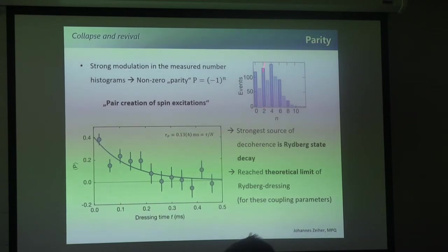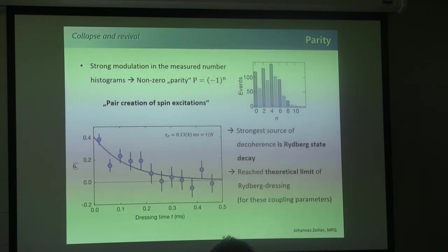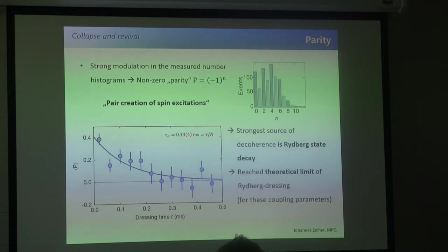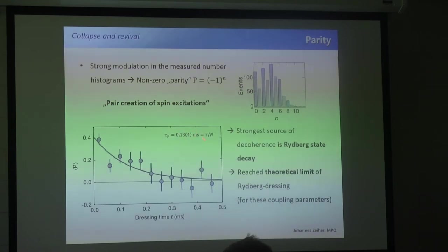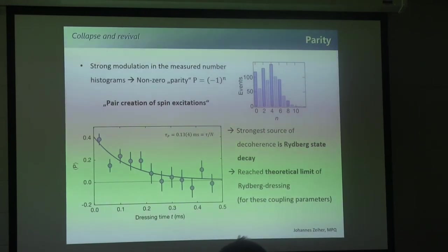The data shows a time constant of 130 microseconds for parity decay. Remembering the atom lifetime was 1.2 milliseconds, taking tau/N with approximately 10 atoms gives 0.13 milliseconds, consistent with the observation. This allows us to conclude that the strongest source of dephasing or decoherence in our system is loss of individual atoms — if you lose a single atom it changes the parity. We also conclude that we reach the theoretically optimal coherence for Rydberg dressing at our specific omega and delta parameters.